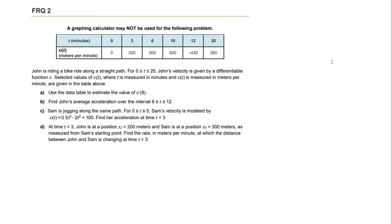So we're given John is riding a bike along a straight path for 0 to 20. John's velocity is given by this table and we want to use the data table to estimate the value of v prime of 8.